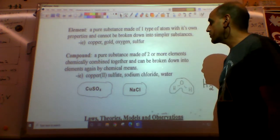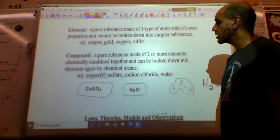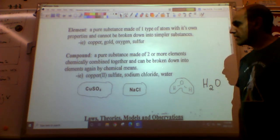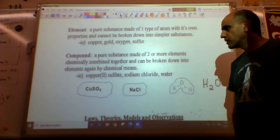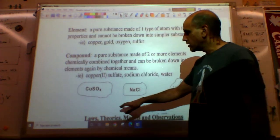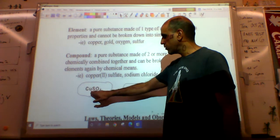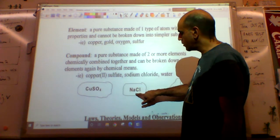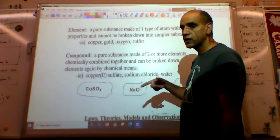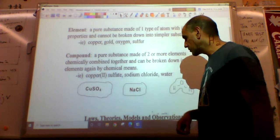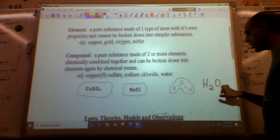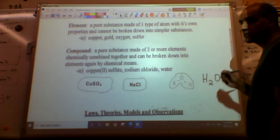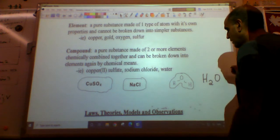A compound is a pure substance made up of two or more elements chemically combined together, and they can be broken down into elements by chemical means or by using electricity. So here are some compounds you can see: CuSO4, one copper atom, one sulfur, four oxygen. NaCl, one sodium, one chlorine. How do I know it's a new element? Every time you hit a new capital, that's a new element. And then, here's H2O. Those are all compounds. Pure substances made up of two or more different elements chemically combined.